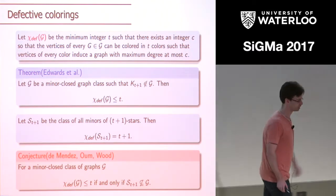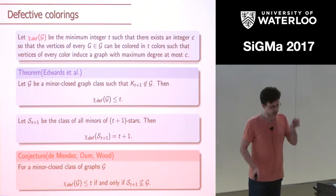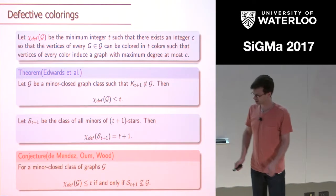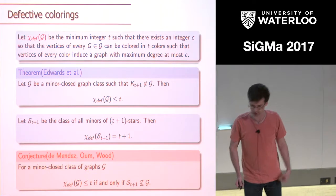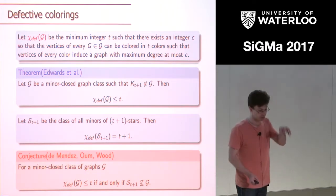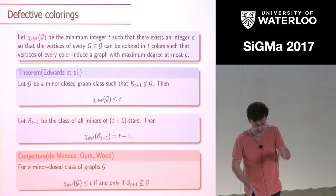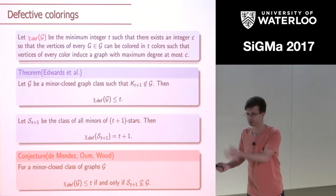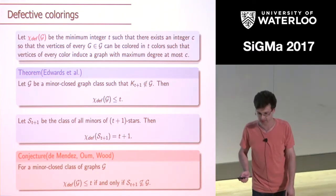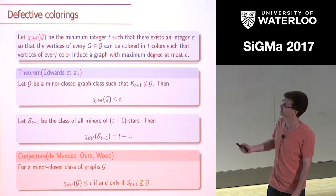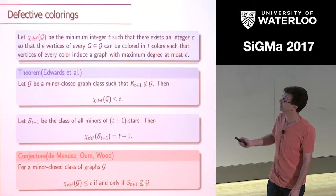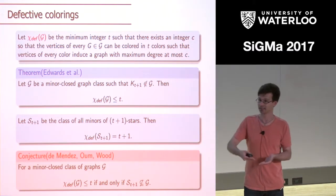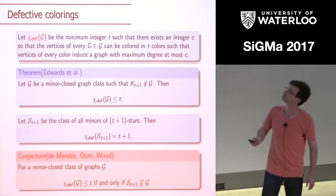The conjecture of Ossona de Mendez, Seymour, and David Wood says that you can characterize, just like Hadwiger's conjecture attempts to characterize chromatic number of minor-closed classes, the deficient chromatic numbers of classes. It says the unique non-t-colorable minor-closed class is the class of all T+1-stars. That's the theme I want to continue — looking at coloring parameters of minor-closed classes, which are monotone in terms of the size of the class, and understanding which minor-closed classes are not colorable this way by looking at minimal classes without this property.